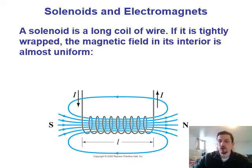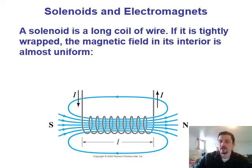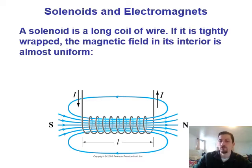Something called a solenoid is a long coil of wire with a current running through it. For a tightly wrapped solenoid, the magnetic field in its interior is very close to being perfectly uniform. Using the right-hand rule on the current, all of these loops have their field pointing from left to right through the center of the coil, and when all those loops add together, you end up with a very close to uniform magnetic field in the middle. This is very useful in science when you want a uniform magnetic field for experiments.